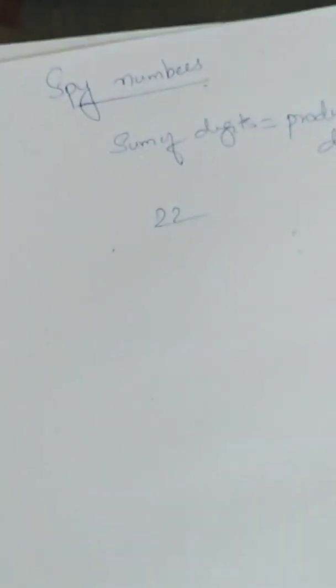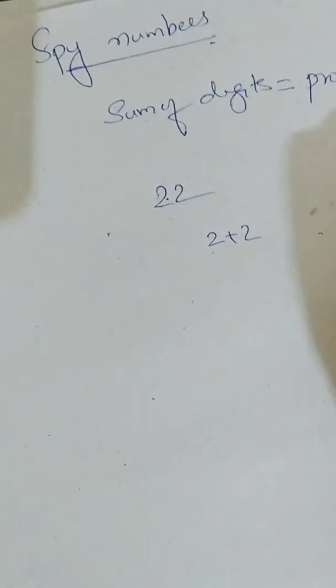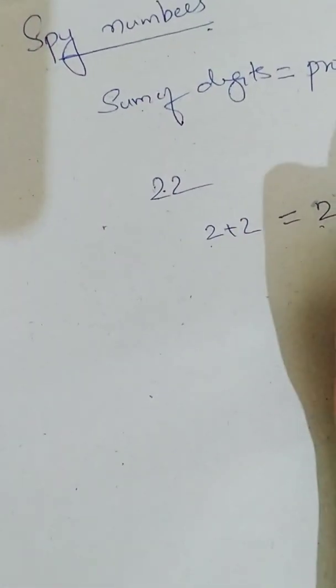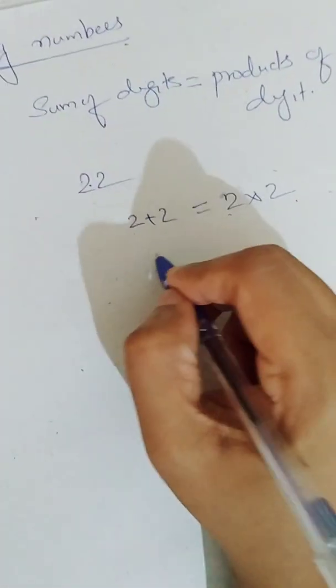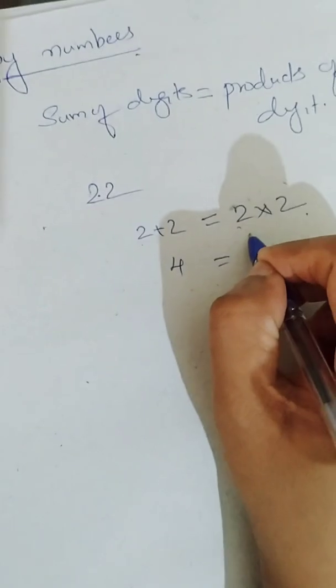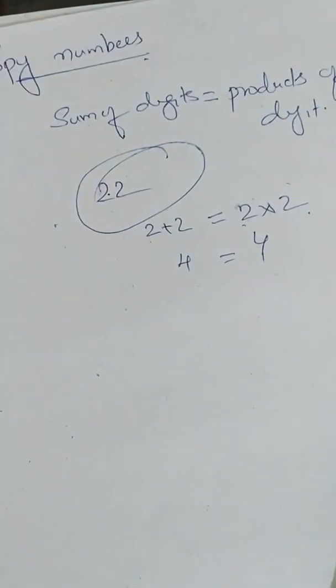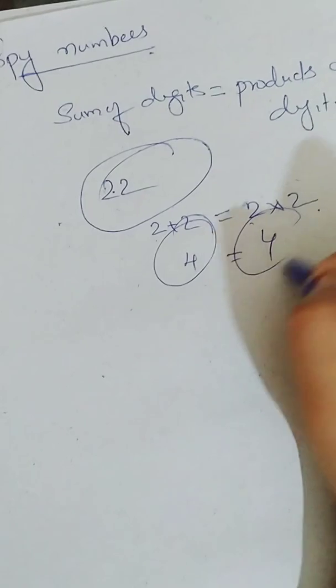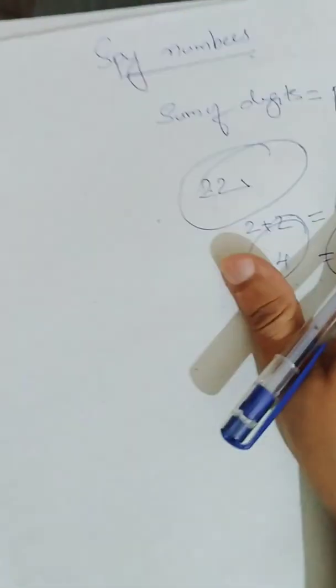Example: suppose 22 is the number. So its sum, that is 2 plus 2, should be equal to 2 into 2. If it is 2 plus 2, 4 is equal to 4. So 22 is a spy number. Sum of the digits is equal to product of the digits. Then it's a spy number.